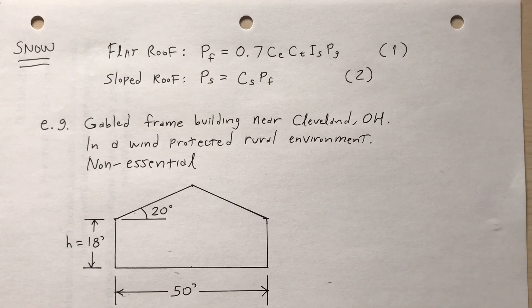If it's a sloped roof, we're assuming that some of the snow slides off. So I've got p_s is equal to c_s times p_f, the p_f from equation one. So I want to do an example involving these formulas.